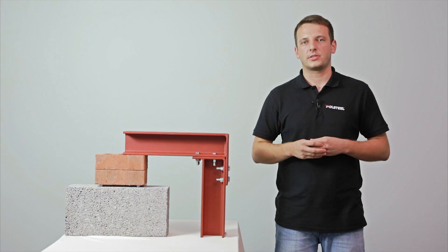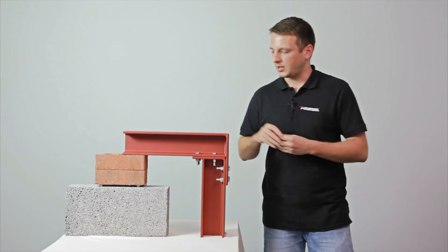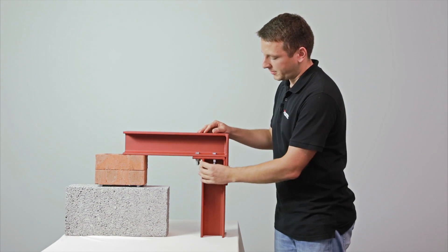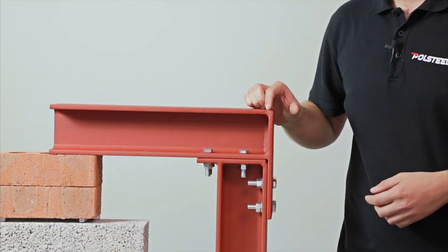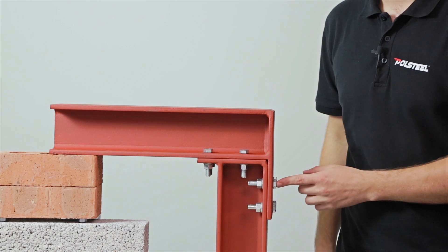Moment connection provides additional stability to the steel structure. It's made of a plate welded to the top of the column as well as an additional plate welded to the side of the beam with a slight overhang. Both are connected by bolts.